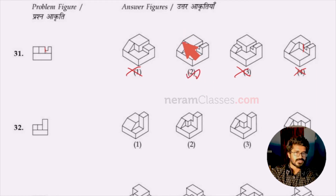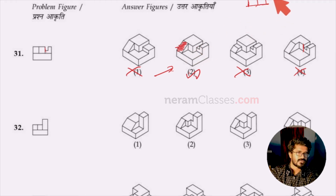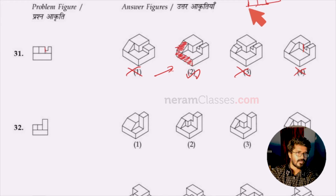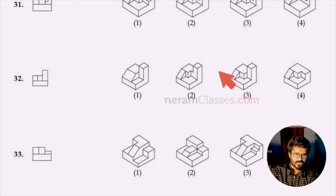If we sketch the elevation based on the arrow direction: first there will be a square, then another square, then an L shape aligned accordingly, and a step shape at the bottom. This is matching with option two, so two is the right answer for question 31. Moving to question 32 — same approach, we need to find which 3D figure will have this elevation.